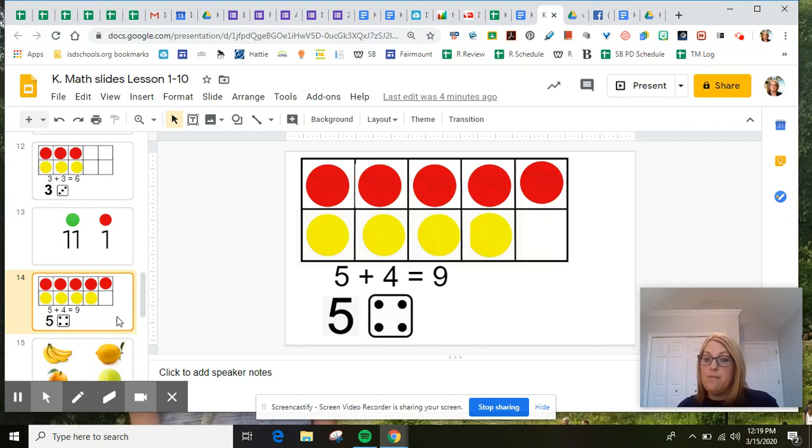Did anybody notice how many red dots there were? What about how many yellow dots? Did you notice that the 10-frame was almost full? Maybe you noticed there was one more red dot and one fewer yellow dot. We have five red dots, and four yellow dots is the same as nine.